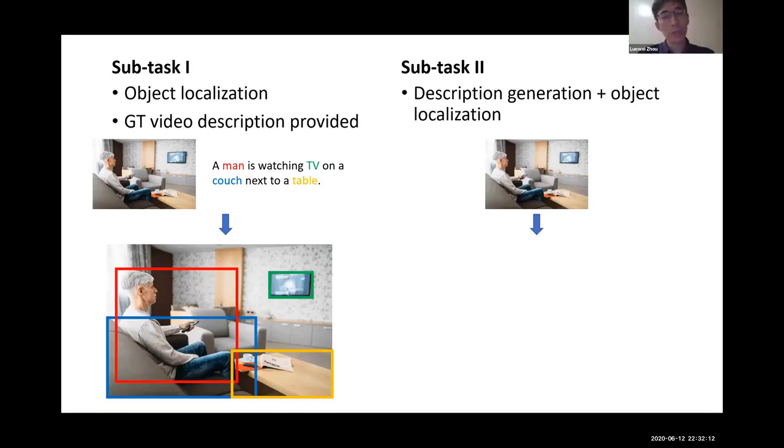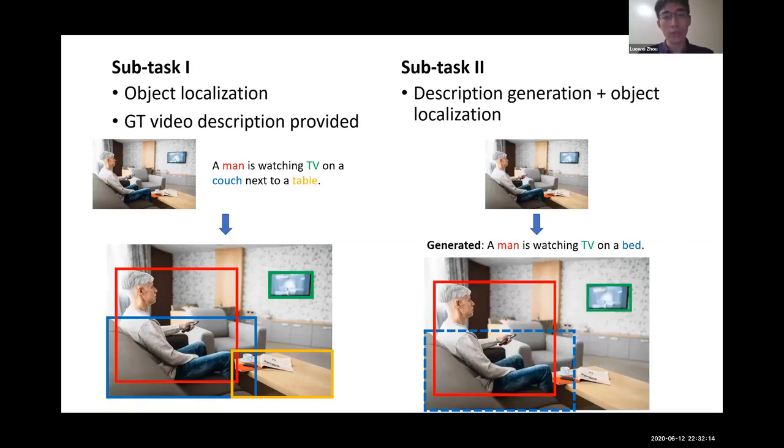We want the model to first output a caption to describe the video and at the same time locate target objects in the video as bounding boxes.